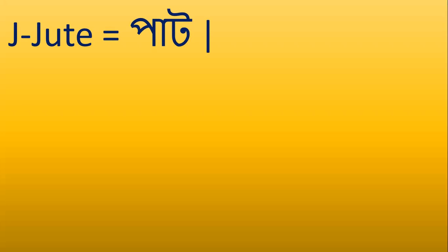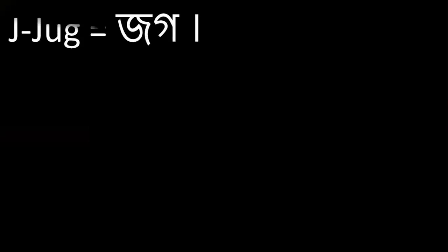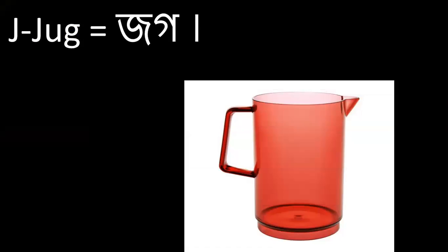J for Jute. Spell J-U-T-E. Joot. Utter with me — Joot. Joot means Pat. J for Jug. Utter Jag. Spell J-U-G. Jag. Jag means Jog.